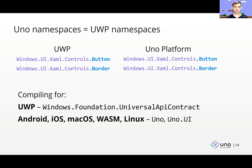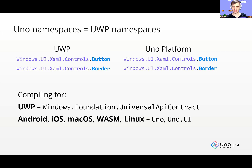If something is not implemented, it throws a NotImplementedException at runtime. But from the UI side, most things are already implemented. The unimplemented things are usually non-UI APIs or enterprise APIs that can't be implemented on mobile. You should be able to take your existing Windows application, recompile it against Uno, and it should work across all the targets.